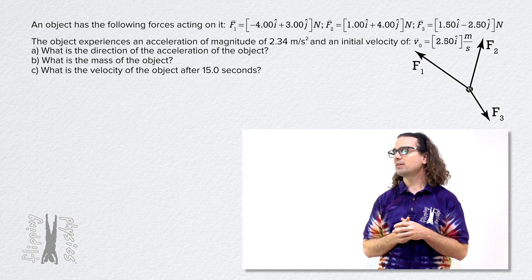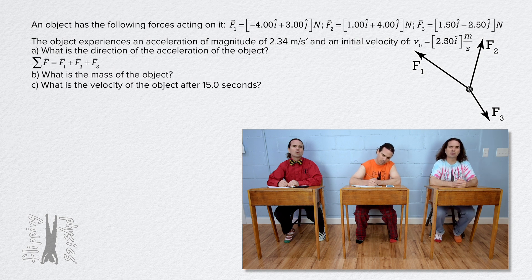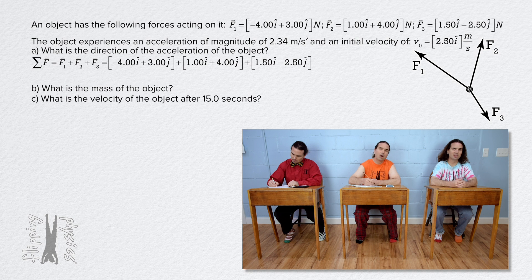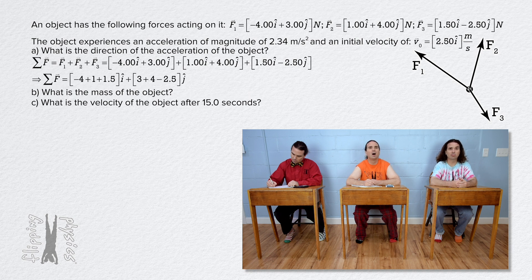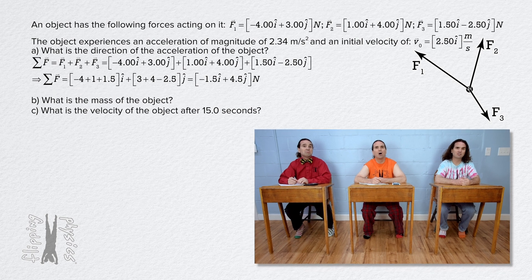Bo, please begin solving the problem. We can determine the net force acting on the object. Plug in all the force vectors and combine all the i's and j's together to get negative 4 plus 1 plus 1.5 all times i, plus 3 plus 4 minus 2.5 all times j. That gives you negative 1.5i plus 4.5j newtons.